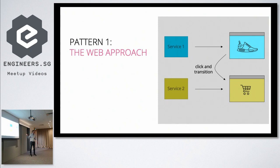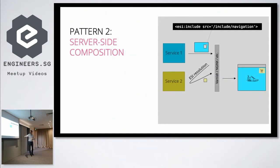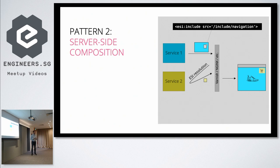Unfortunately in many cases that's not sufficient because users have higher expectations. For example, most e-commerce websites have a little shopping basket indicator at the top showing how many items you have or the total price. If you do server-side composition — rendering HTML on the server, which is a valid approach especially for high-traffic websites — you can handle this. The key idea is composing fragments from different services together on the server.